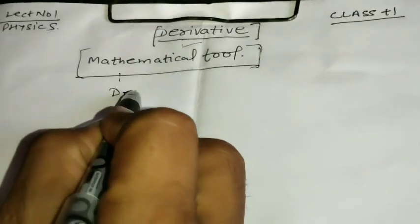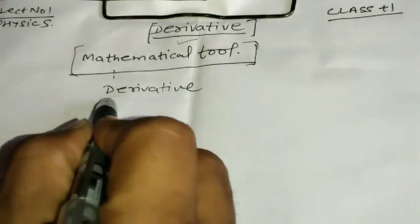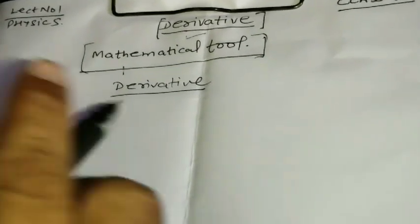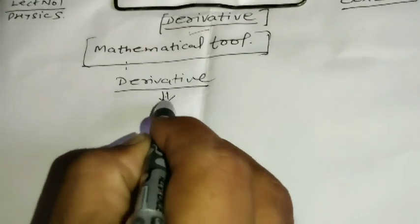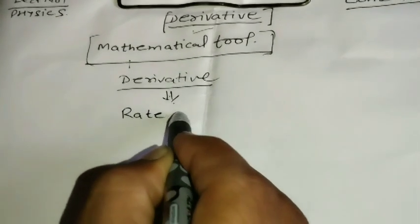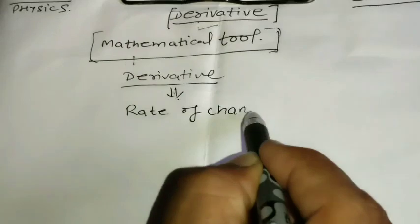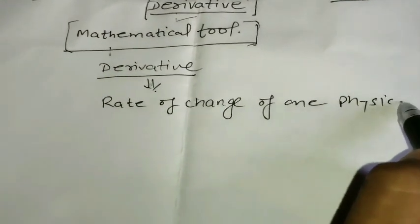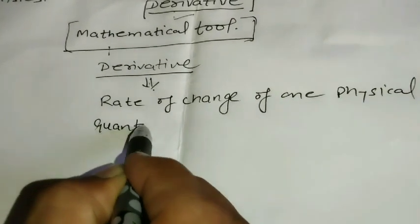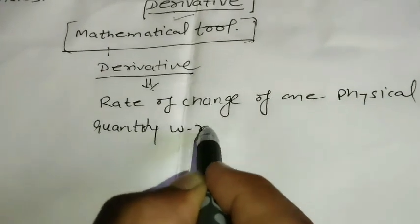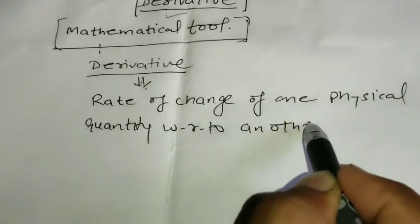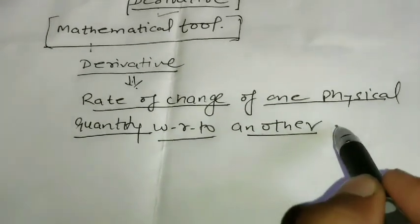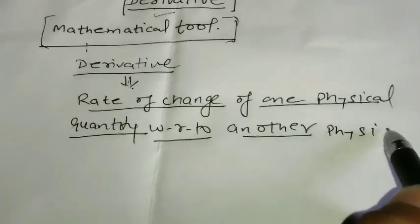So first of all, you should know what is the derivative. What do you mean by the derivative? What do you understand from the derivative? Basically, the derivative means the rate of change of one physical quantity with respect to another physical quantity. Rate of change of one physical quantity with respect to another physical quantity.